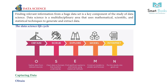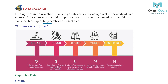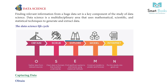Data Science: Finding relevant information from a huge data set is a key component of the study of data science. Data science is a multidisciplinary area that uses mathematical, scientific, and statistical techniques to generate and extract data. The data science life cycle includes: Obtain — gather data from relevant sources; Scrub — clean data into a format machines understand; Explore — find significant patterns and trends using statistical methods; Model — construct models to predict and forecast; Interpret — put the results into good use.